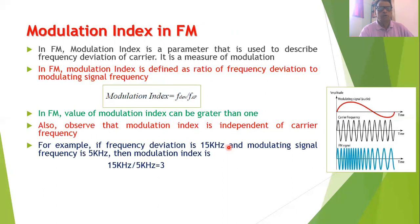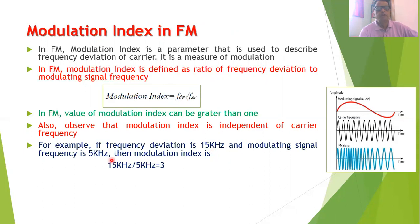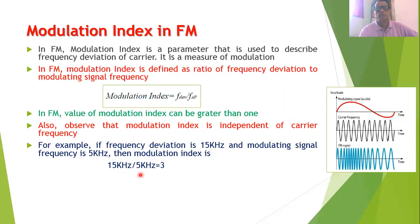For example, if the frequency deviation at any given point in FM is 15 kHz — it can be positive or negative 15 kHz — and the modulating signal frequency is 5 kHz, then the modulation index equals 15 kHz divided by 5 kHz, which equals 3.